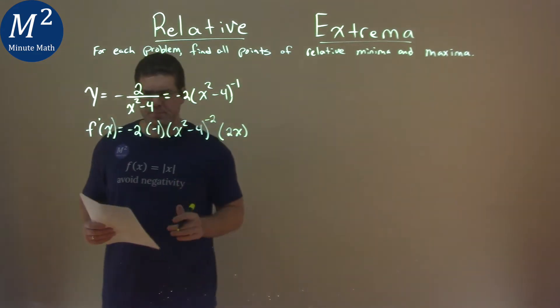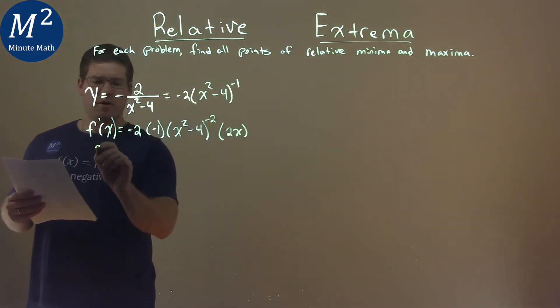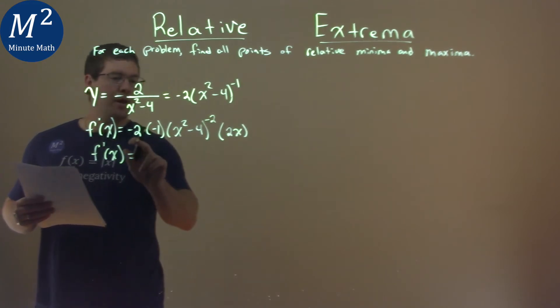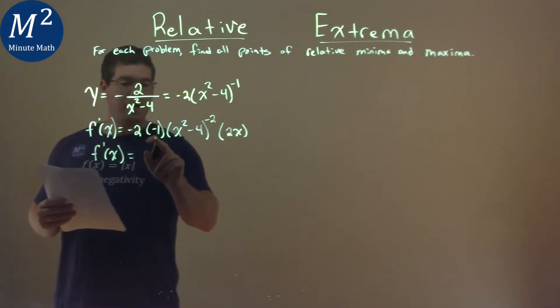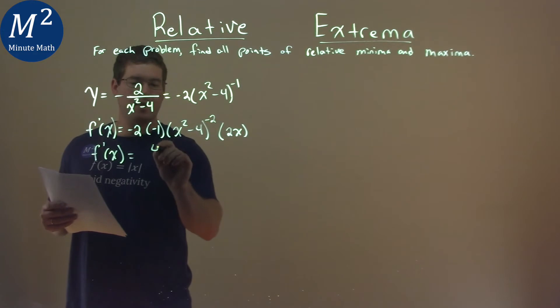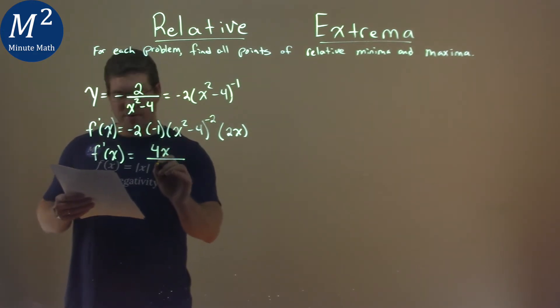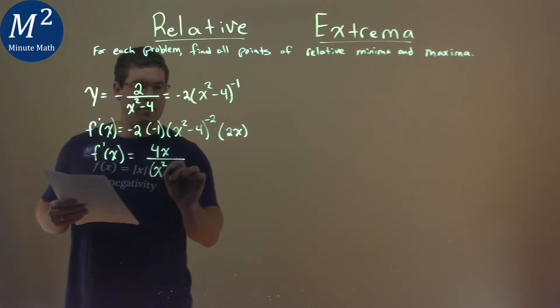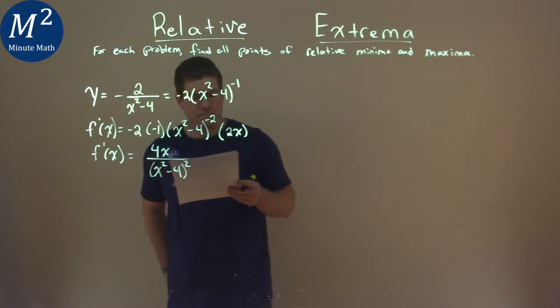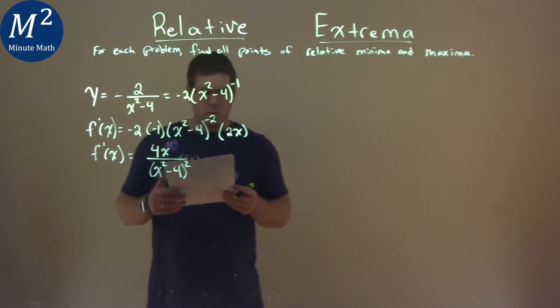All right, let's clean that up a little bit. We have f prime of x here: negative 2 times negative 1 is positive 2, times 2x is 4x over our denominator, and we have x squared minus 4 to now the positive 2 power. We'll bring that down to the denominator.